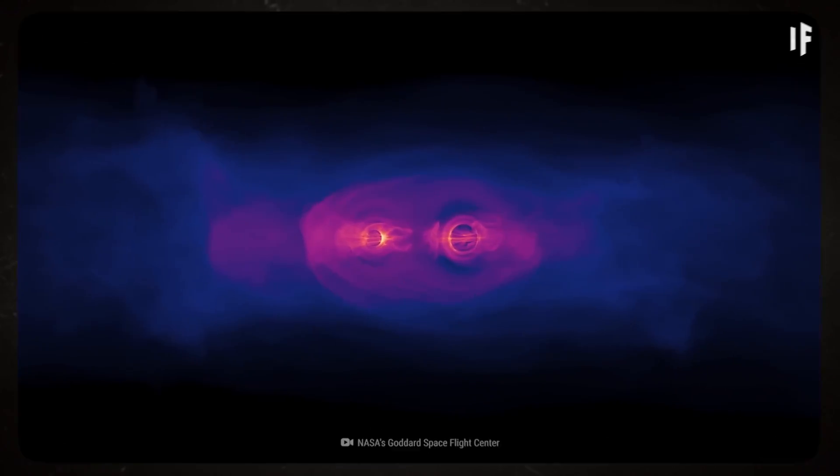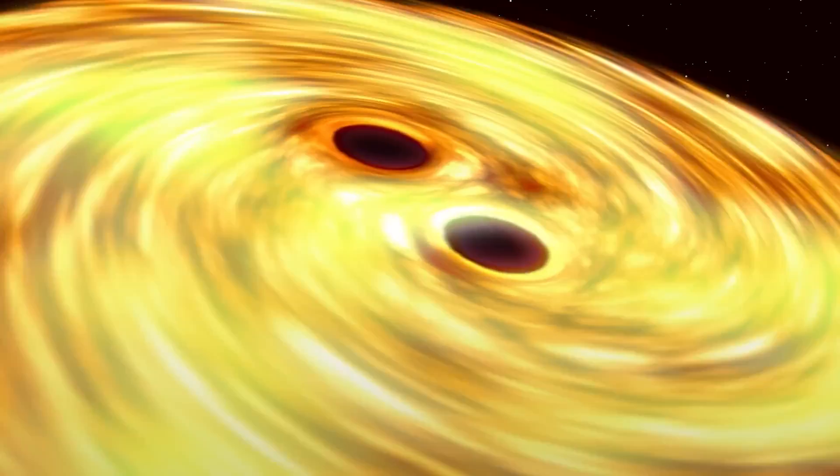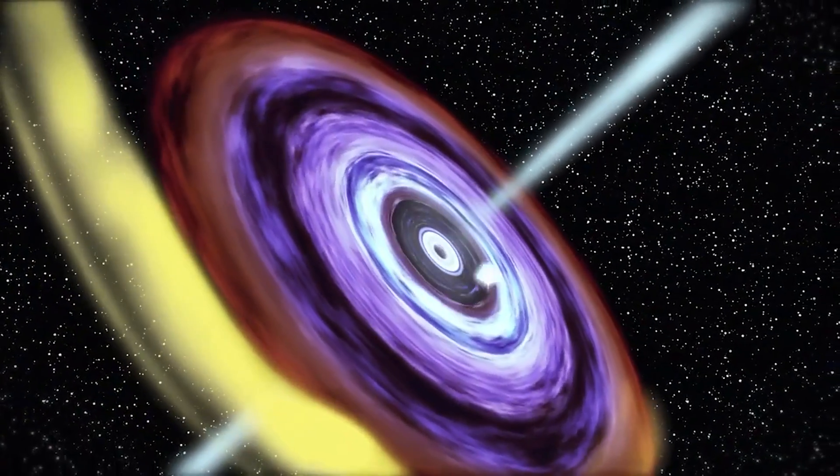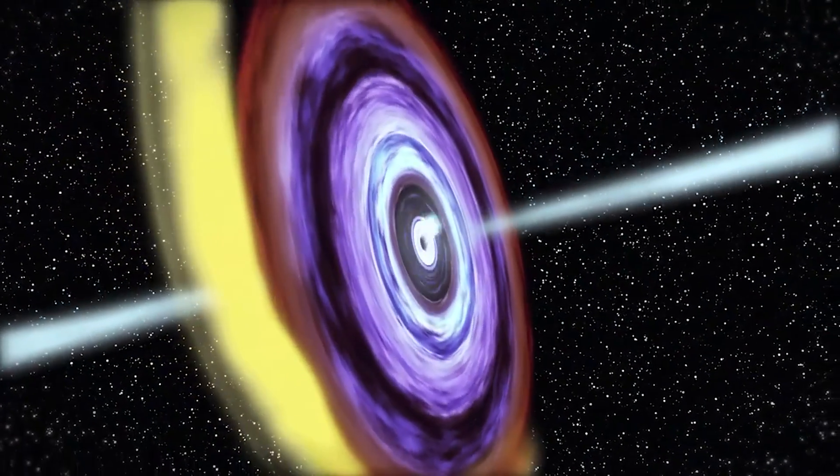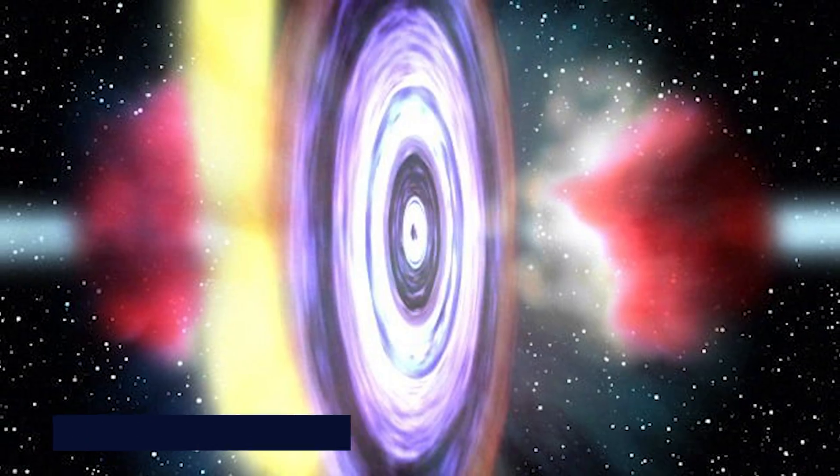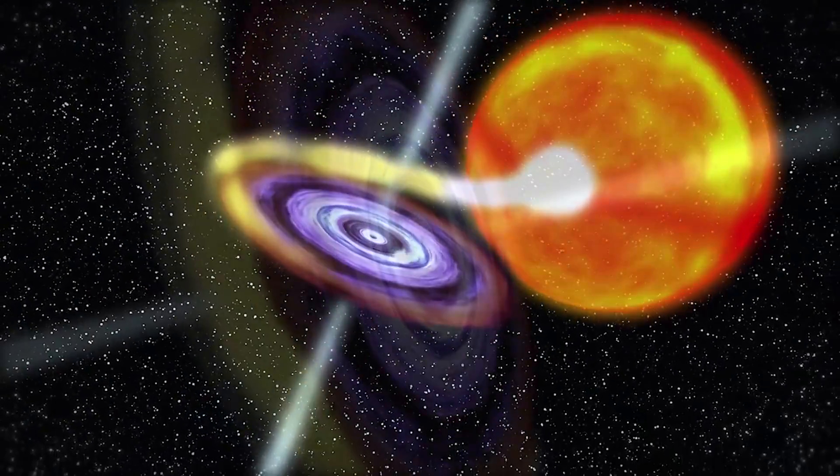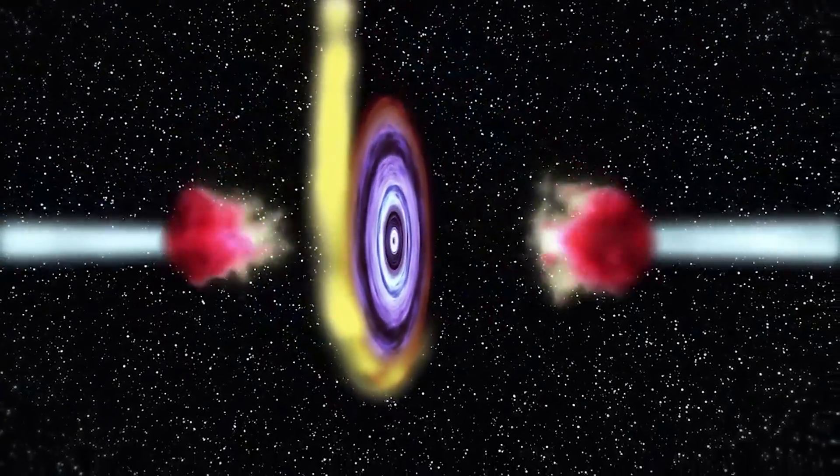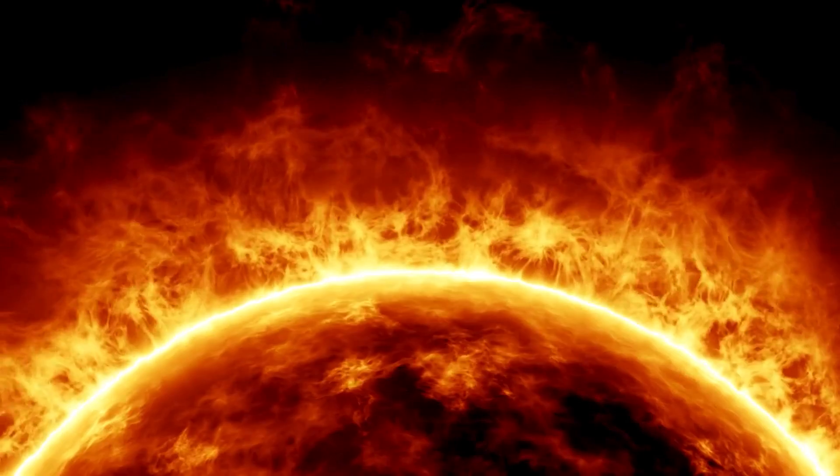Although black holes have always been thought of as vacuums, recent research has shown that they can really eject matter. The black hole H 1743-322, located about 28,000 light years from Earth, has been observed to have sucked material off a companion star and spewed some of it out as gigantic bullets of gas traveling at nearly a quarter of the speed of light.